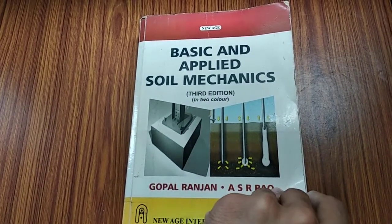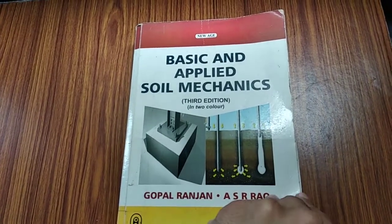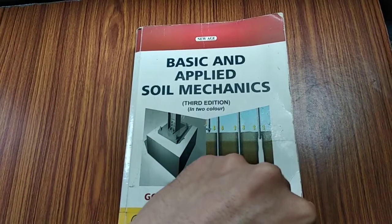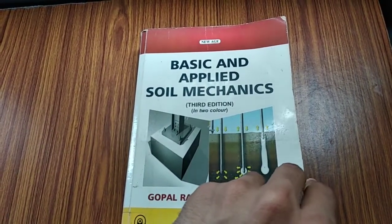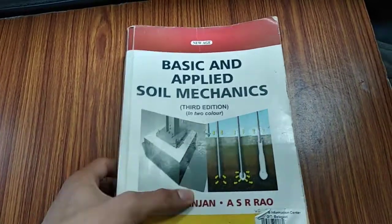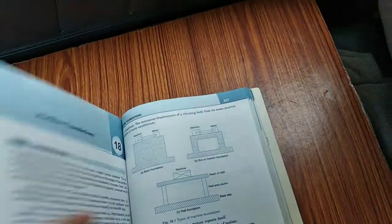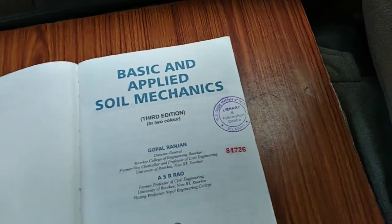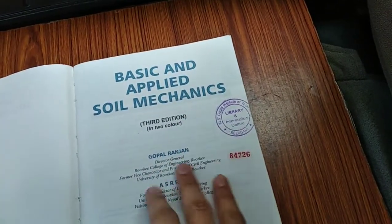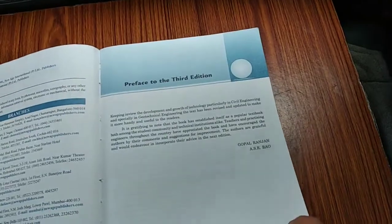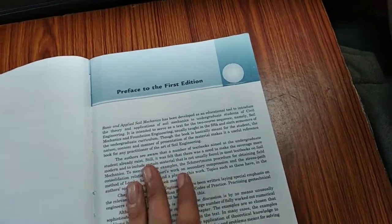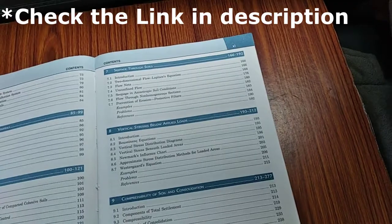This book is for students studying B.Tech or BE in civil engineering who find it difficult to understand geotechnical or soil mechanics textbooks. This textbook has a lot of pages, almost 700, nearly 800 pages. This is a very old book written by professors from IIT Roorkee. Both authors are professors of IIT Roorkee.